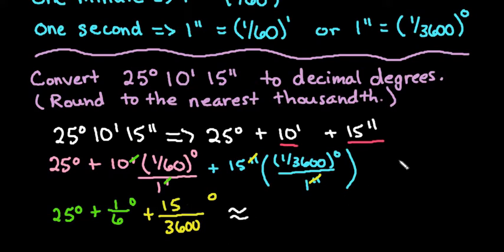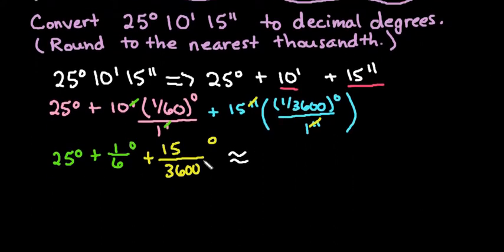So as long as you don't round and put in the rounded answer, you should be okay. So with this, what we're going to do is you would just type into any kind of calculator 25 plus 1 divided by 6 plus 15 divided by 3600.